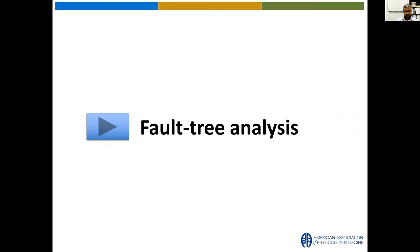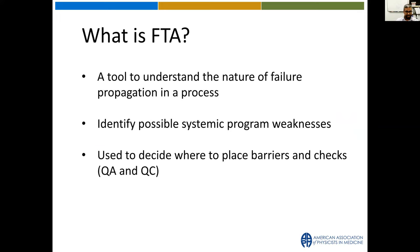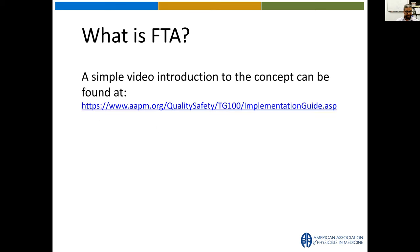Now let's take a closer look at the next piece of the puzzle: fault tree analysis (FTA). Now that we have created a process and prioritized our risks, FTA will help you understand how failure propagation happens in the process. It identifies systemic program risks and helps you decide when and where to place barriers — such as QAs and QCs — into the process.